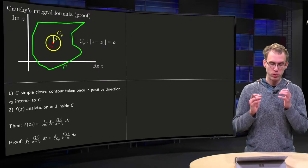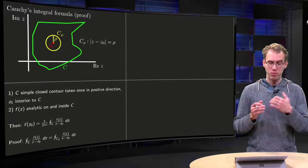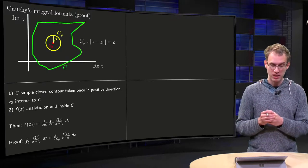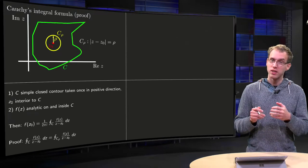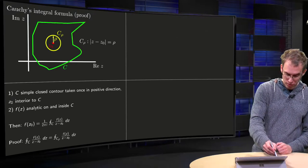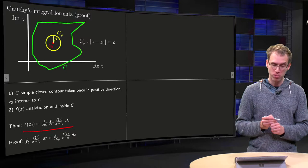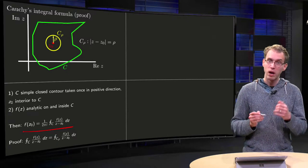So what do we know? Well, we know that C is simple closed, taken once in a positive direction, and f of z is analytic on the inside C. So we want to prove Cauchy's integral formula. How do we prove it?